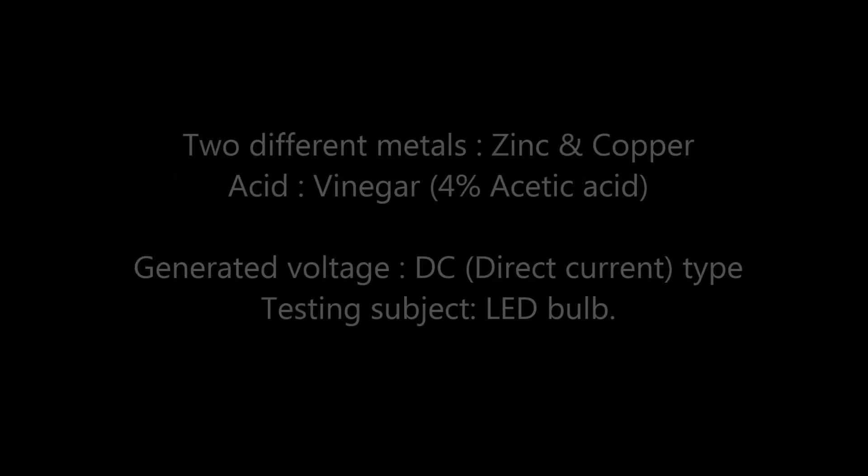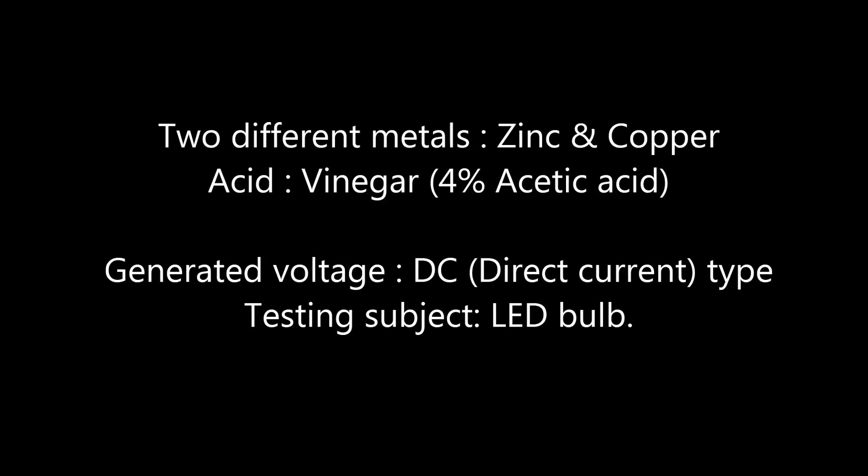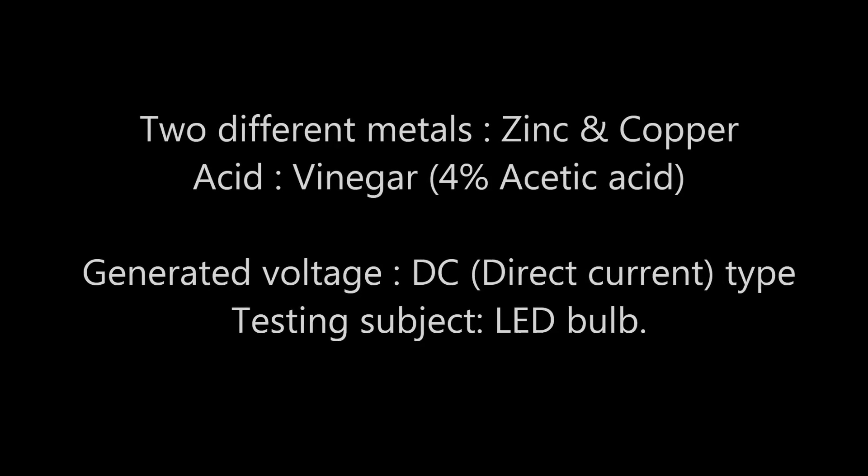So we'll be using two different metals and dip it into vinegar which is 4% acetic acid. We'll use the DC type of voltage to glow an LED bulb.